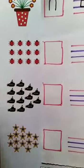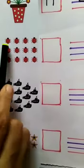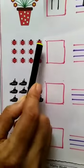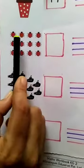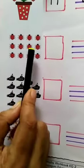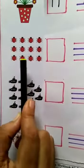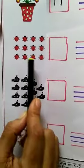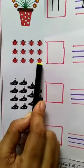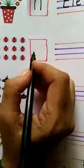Now we will count it. 1, 2, 3, 4, 5, 6, 7, 8, 9, 10, 11, 12. How many bugs are there? 12.